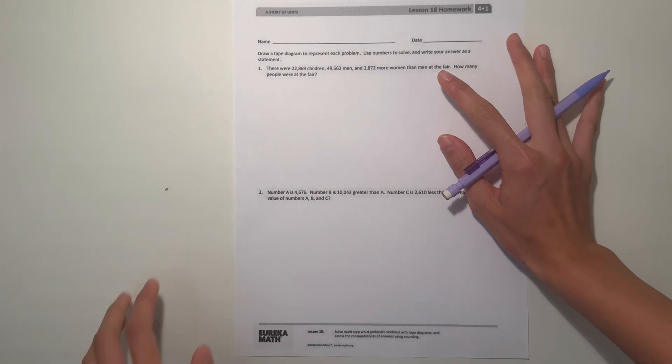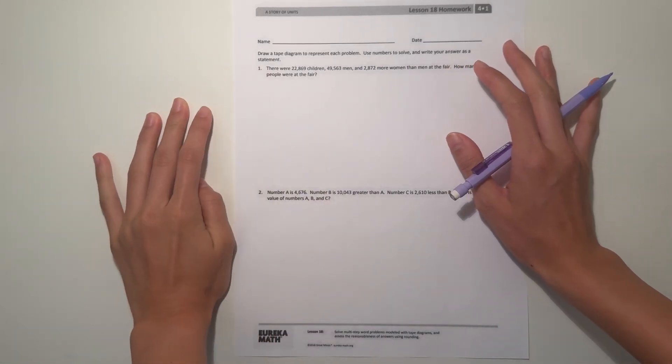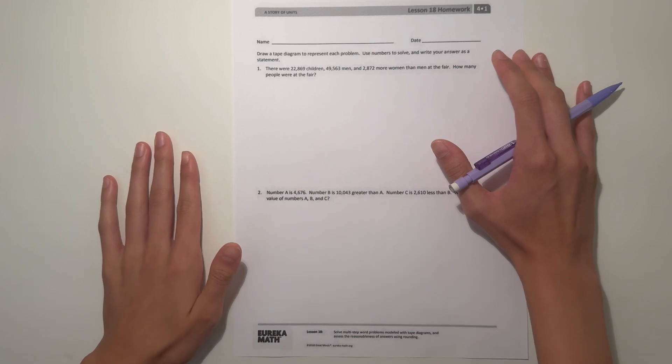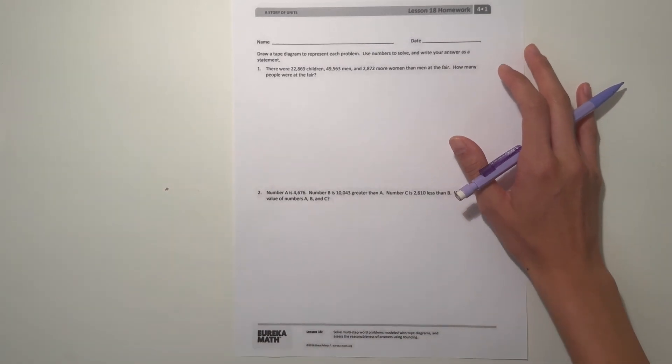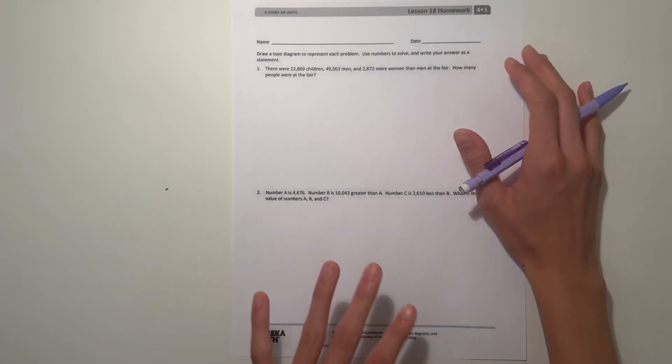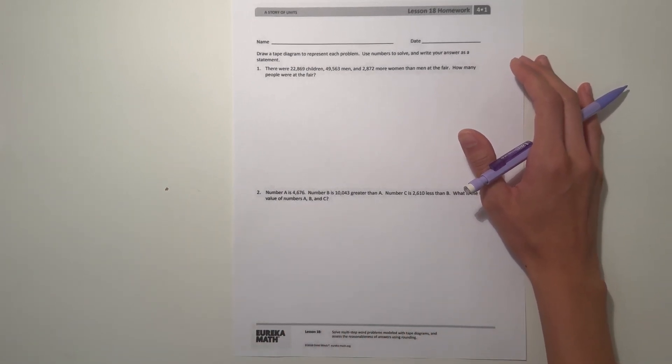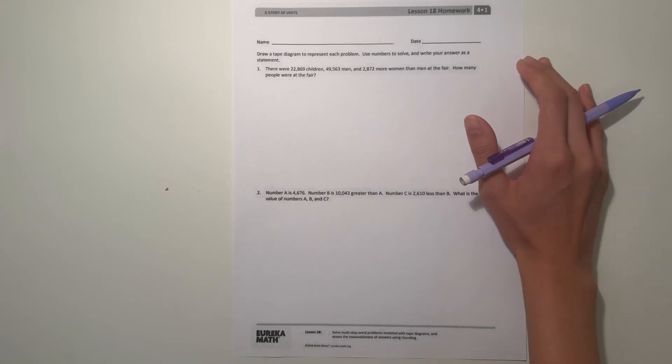Number one: There were 22,869 children, 49,563 men, and 2,872 more women than men at the fair. How many people were at the fair?